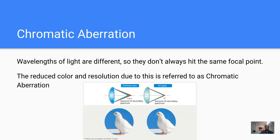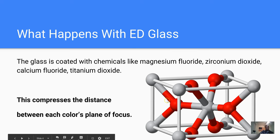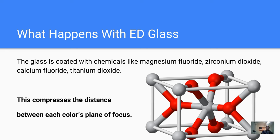What's done to make glass into ED glass is that certain chemicals are vaporized and the glass itself is coated with those chemicals. It started with magnesium fluoride — manufacturers would vaporize magnesium fluoride and coat the glass with it. Since then, other chemicals have been found that work just as well. What these chemicals do is compress the distance between each color's plane of focus, dispersing the light in a way that allows the wavelengths to converge at that specific focal point.